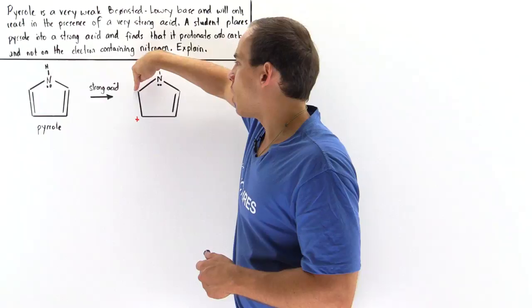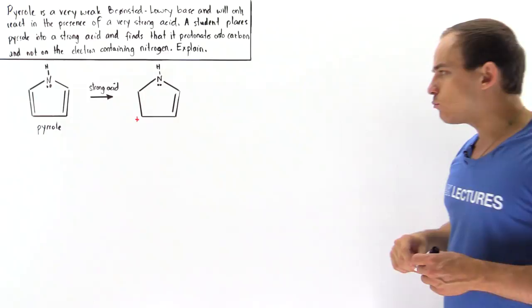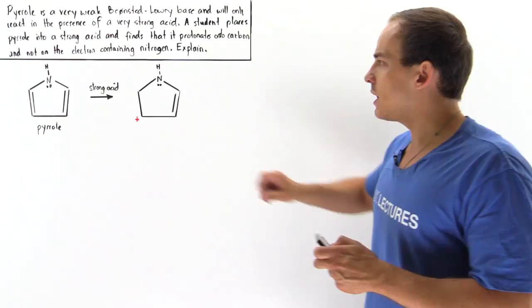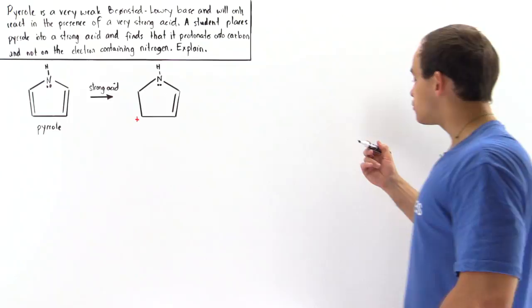Why does the H atom go onto this carbon here instead of our nitrogen? The way we're going to answer this question is by examining what takes place when the nitrogen is protonated and comparing that to what takes place when the carbon is protonated by our acid.